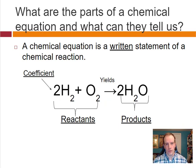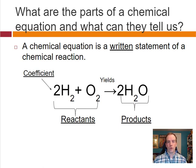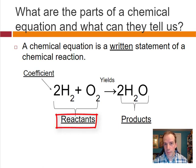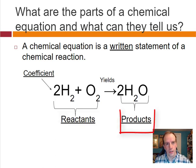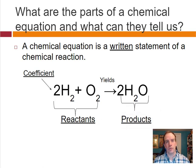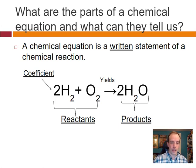Scientists use a chemical equation to describe what's happening with the elements in a chemical reaction. We have a before and after: the reactants are the elements and compounds that are there before, and the products are what are yielded after. In this example, hydrogen is burned and water is produced.